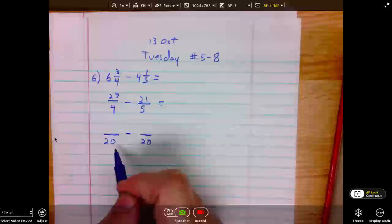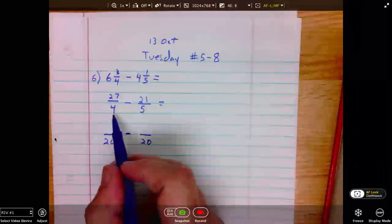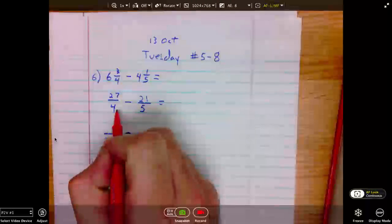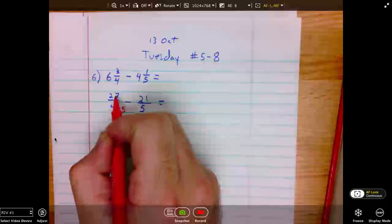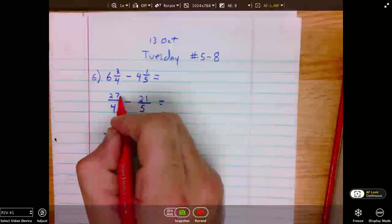The question is, what did I need to multiply each one of these numbers by to get to 20? Well, 4 times 5 gives 20. So, I must likewise multiply the numerator times 5.